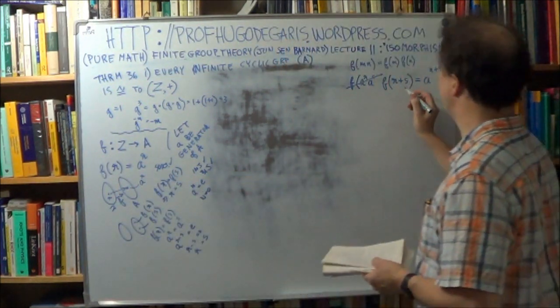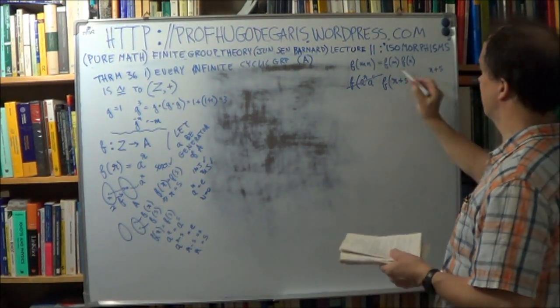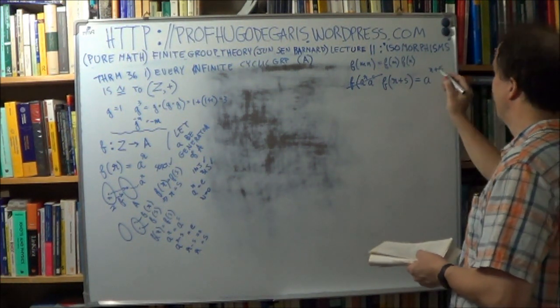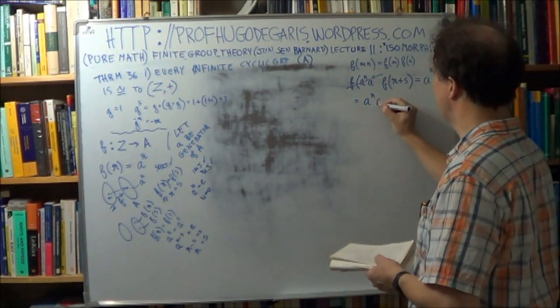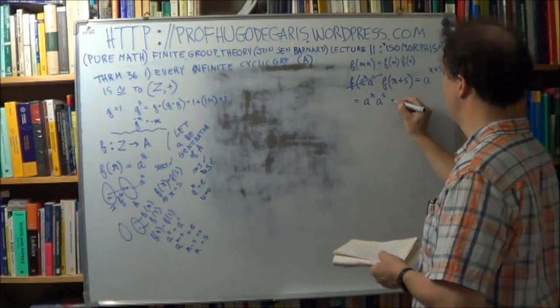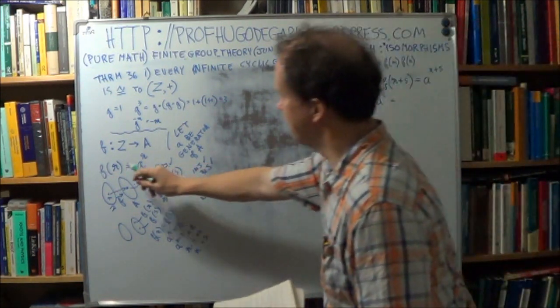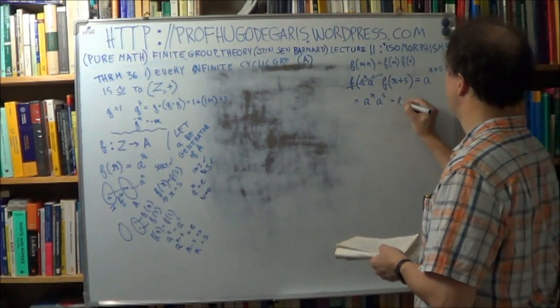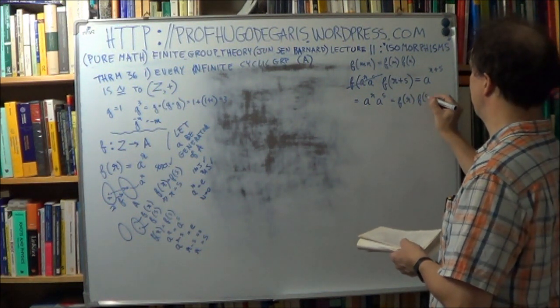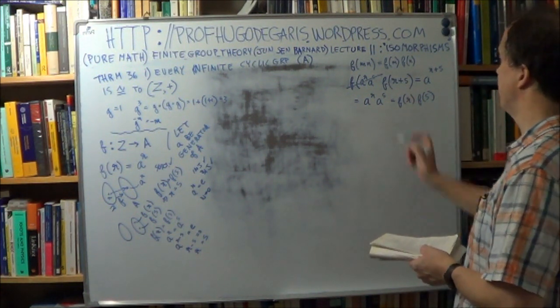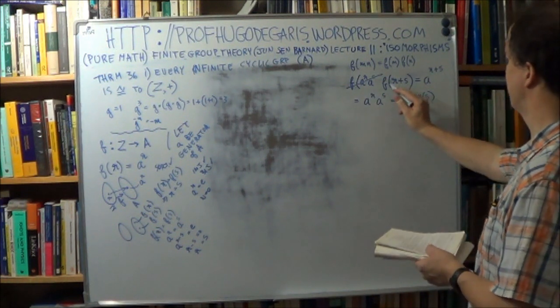Now, why did I do this, well, I want to get something like this, right, now, a to the r plus s is the same thing as a to the r times a to the s, right, okay, but what is a to the r, well, it's f of r, so, that's the f of r, and similarly, that's f of s, all right, and there it is, well, here, okay.